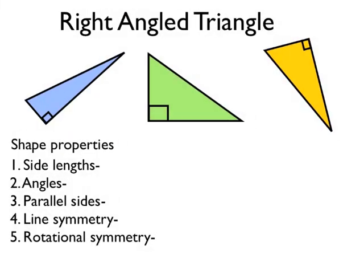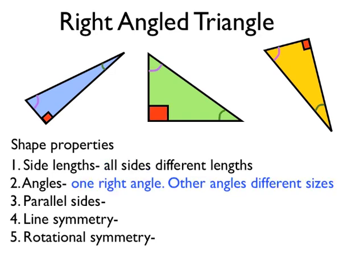Let's look at right angle triangles now. I've drawn three right angle triangles here. In a right angle triangle, all the sides have different lengths — all three sides are a different length. As the name suggests, one of the angles in the triangle is a right angle: 90 degrees. You can see them drawn conventionally here with a square in the corner where the angle is a right angle, marked in red so you can clearly see which are the right angles.